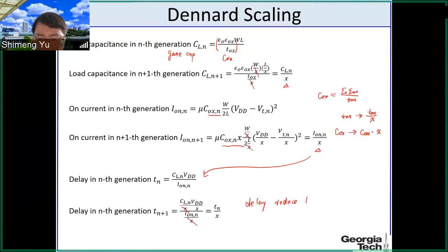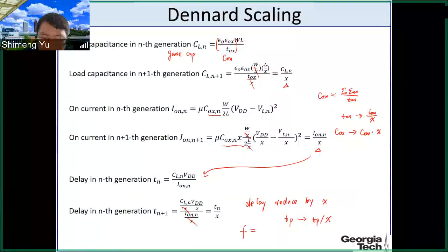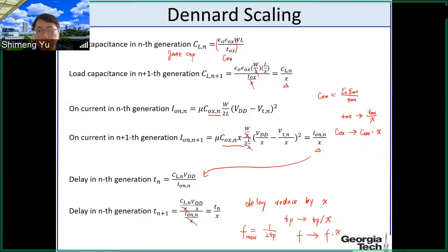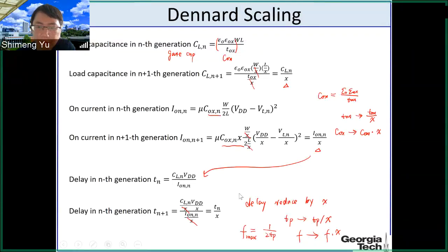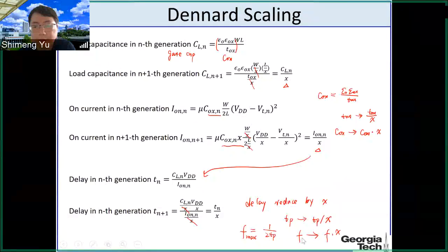Plugging CL/x, VDD/x, and I_on/x into the delay equation gives one x in the denominator. The conclusion is the delay reduces by x: propagation delay t_p becomes t_p/x. The maximum frequency f_max = 1/(2t_p), so frequency becomes frequency times x — you can run the circuit faster. This is the indication of Dennard scaling on performance.